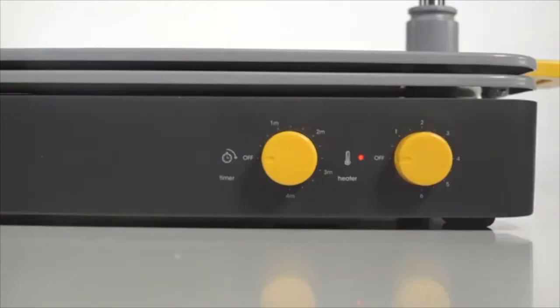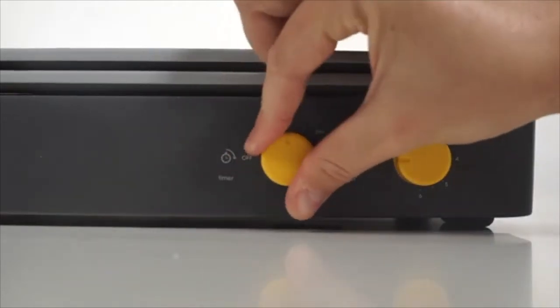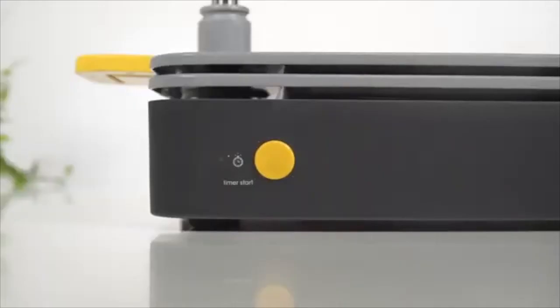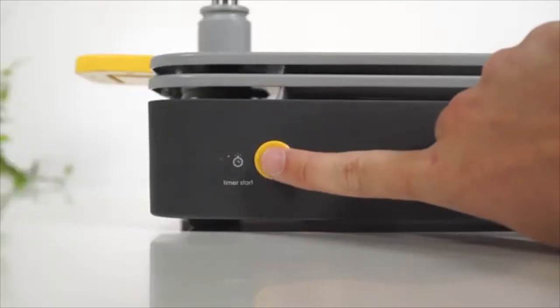The timer dial can also be set to the designated time found on Meku sheet packs. The timer can be activated by pushing the timer start button.